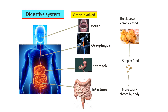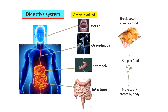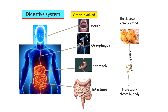Digestive system: organs involved are the mouth, esophagus, stomach, and intestines. Its function is to break down complex food into simpler food so it can be easily absorbed by our body.